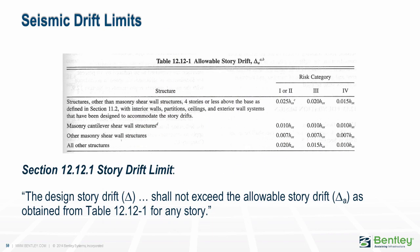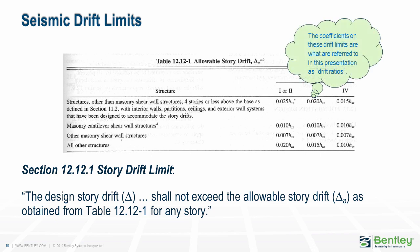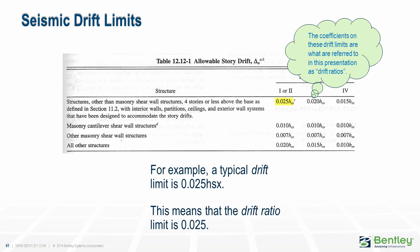The limits on drift are given in Table 12.12-1. Structures with a higher risk category have more stringent drift limits, and more brittle structures such as masonry shear wall structures also have more stringent drift limits. Note that the table limits the overall drift as a function of story height, and the coefficients on these limits are what we refer to as the drift ratio limits. A typical drift limit is 0.025 times the story height, meaning the drift ratio limit is 0.025. It is convenient to work with the drift ratio limit because it is the same for all stories regardless of story height.